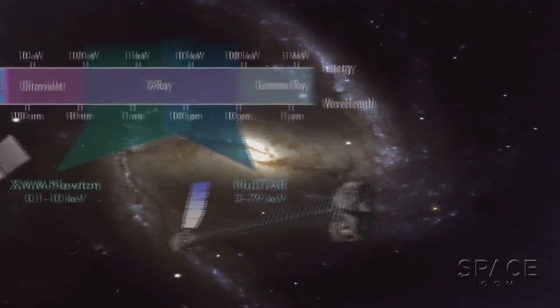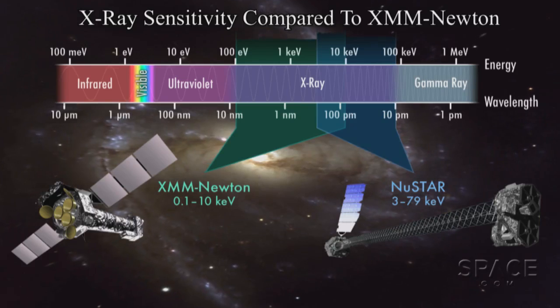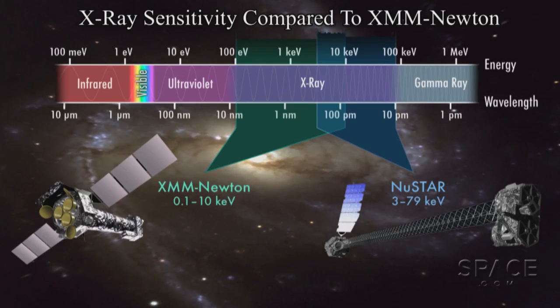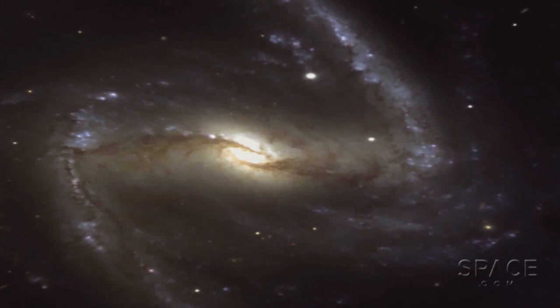With this instrument's higher sensitivity, the NUSTAR team has more or less proven that black holes can spin very rapidly. At least this one does.